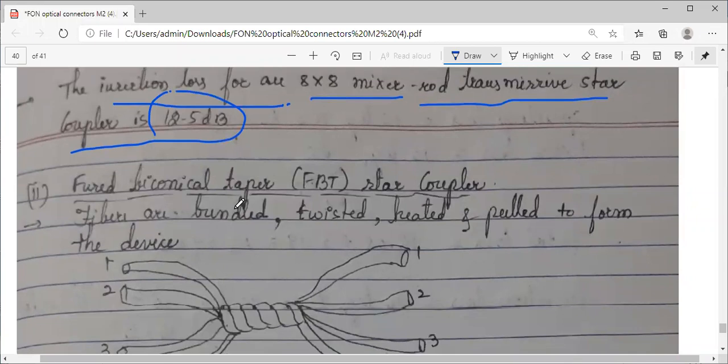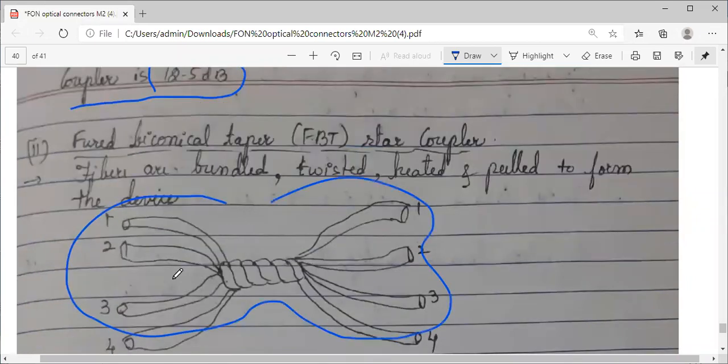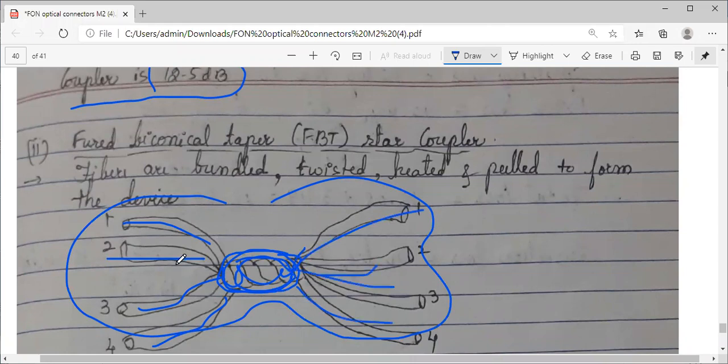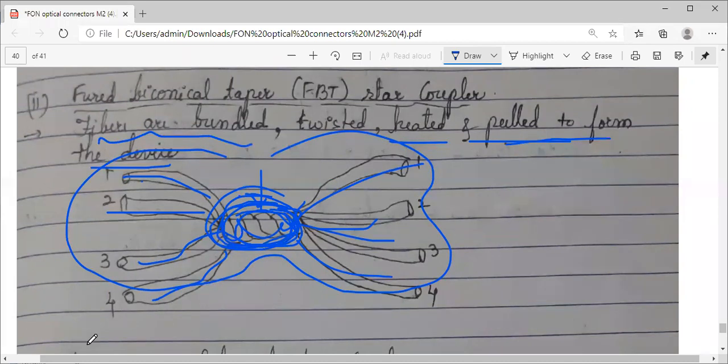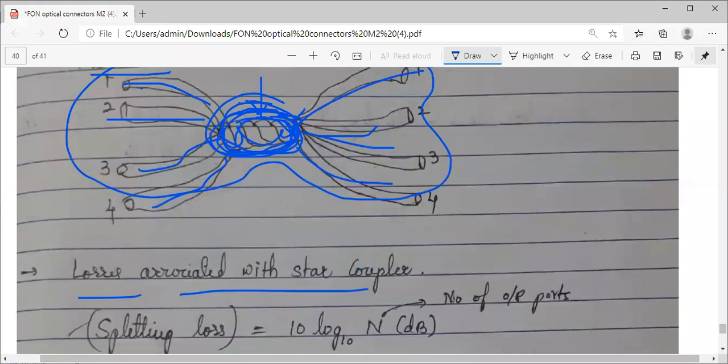Coming to the second technique used in star coupler: FBT. You can see how you squeeze the clothes to dry them. Likewise, a bunch of optical fibers all together are twisted. In this figure, the fibers are bundled, twisted, heated, and pulled. They are fused to form the device part.